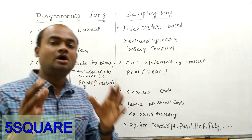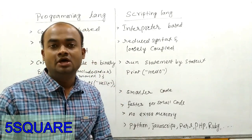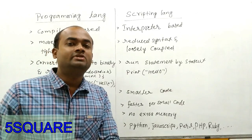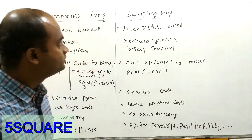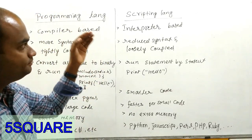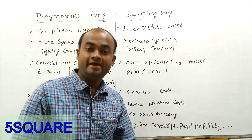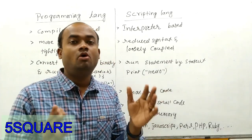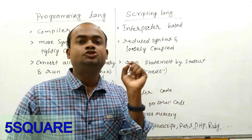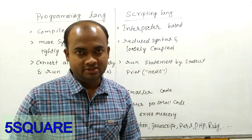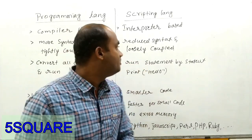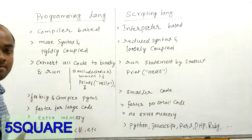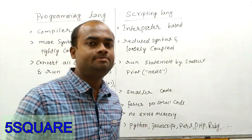The converter in programming languages is called a compiler. A compiler is a software that converts the programming language into a machine-understandable language. In scripting languages, there is also a converter, and that converter is called an interpreter.